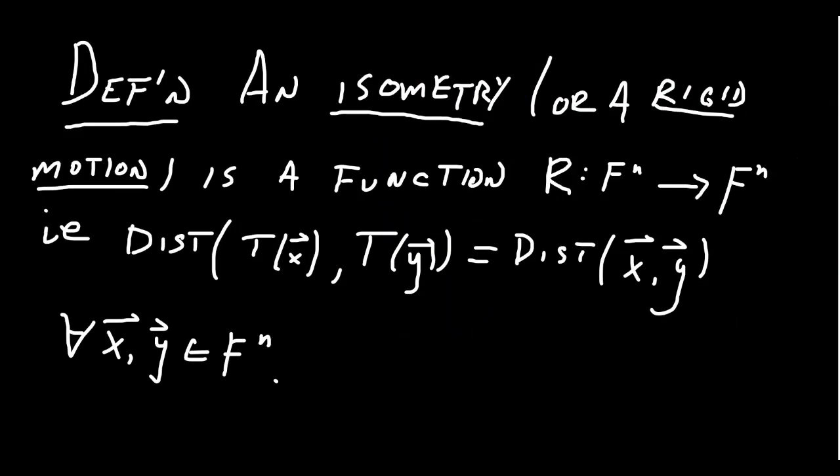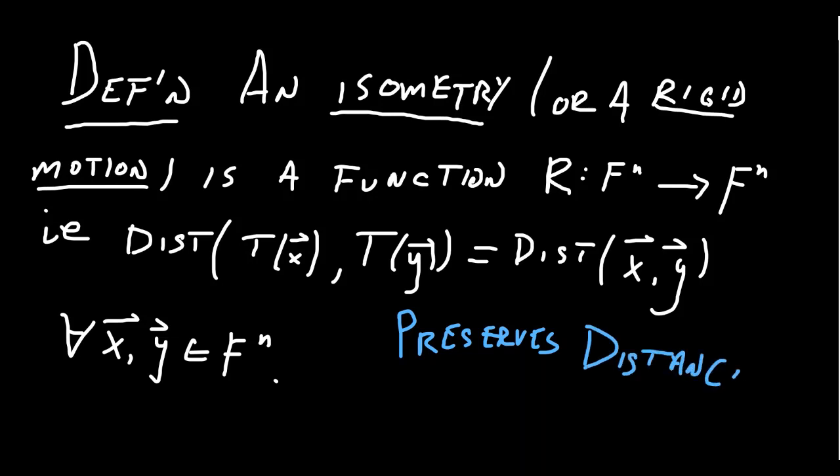Continuing on what we were talking about earlier about how multiplication by orthogonal matrix doesn't change the angles or distances, can we generalize that principle a little bit? If we take what's known as an isometry, sometimes called a rigid motion, it is a function on our vector space Fn to Fn such that the distance between the vectors Tx and Ty is the same as the original vectors x and y. So isometries don't change distances between vectors — they preserve distance.